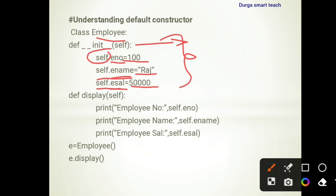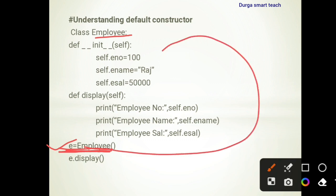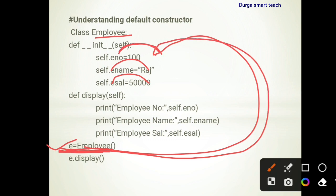The constructor is initialized whenever the object is created. We create an object: e = Employee(). Employee is the class, e is the object. Whenever the object is created, the constructor values are initialized — 100 is stored in e_number, 'Raj' is stored in e_name, and 50000 is stored in e_salary. That is the importance of the constructor.